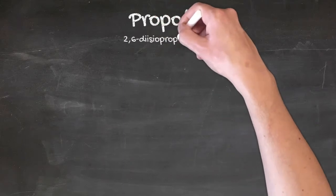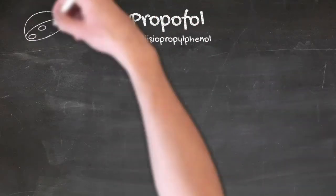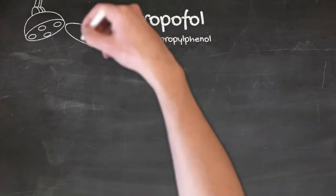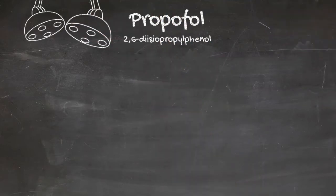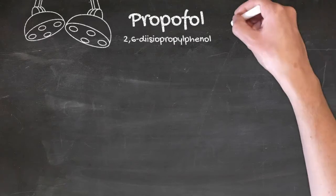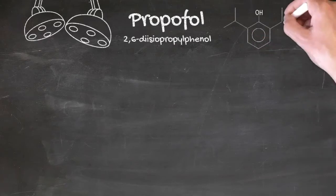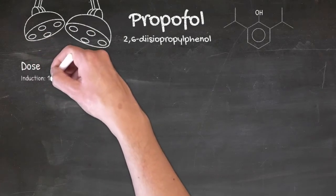The first induction agent we're going to talk about is the one you'll use most often: propofol, also called 2,6-diisopropylphenol. It's a phenol derivative, as you can see from the drawing here, with isopropyl groups at positions 2 and 6.